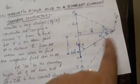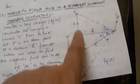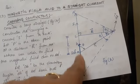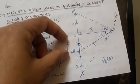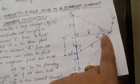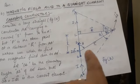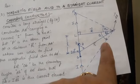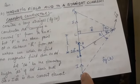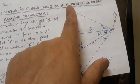R vector makes an angle theta with the current element IDL. LM is the distance from L to M, that is small l. Phi is the angle between capital R vector and small r vector. Theta 1 is the angle LPA, and theta 2 is the angle LPA-dash.